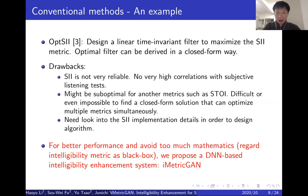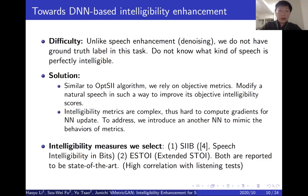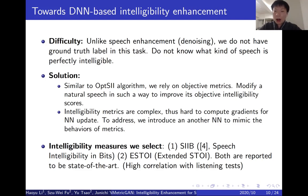For better performance and to avoid excessive mathematics, we hereby propose a neural network-based intelligibility enhancement system called iMeshika, or IMetriGAN for short. Neural networks have achieved great success in speech denoising, but so far very few works have applied them to intelligibility enhancement. This is because we don't know what kind of speech is perfectly intelligible. For example, for speech denoising we can simply regard unprocessed clean speech as the target, but we don't have a corresponding ground truth label in this task. Our solution is similar to the OPTSI method discussed before — we will rely on some objective metrics, modifying natural speech in a way to improve its objective scores.